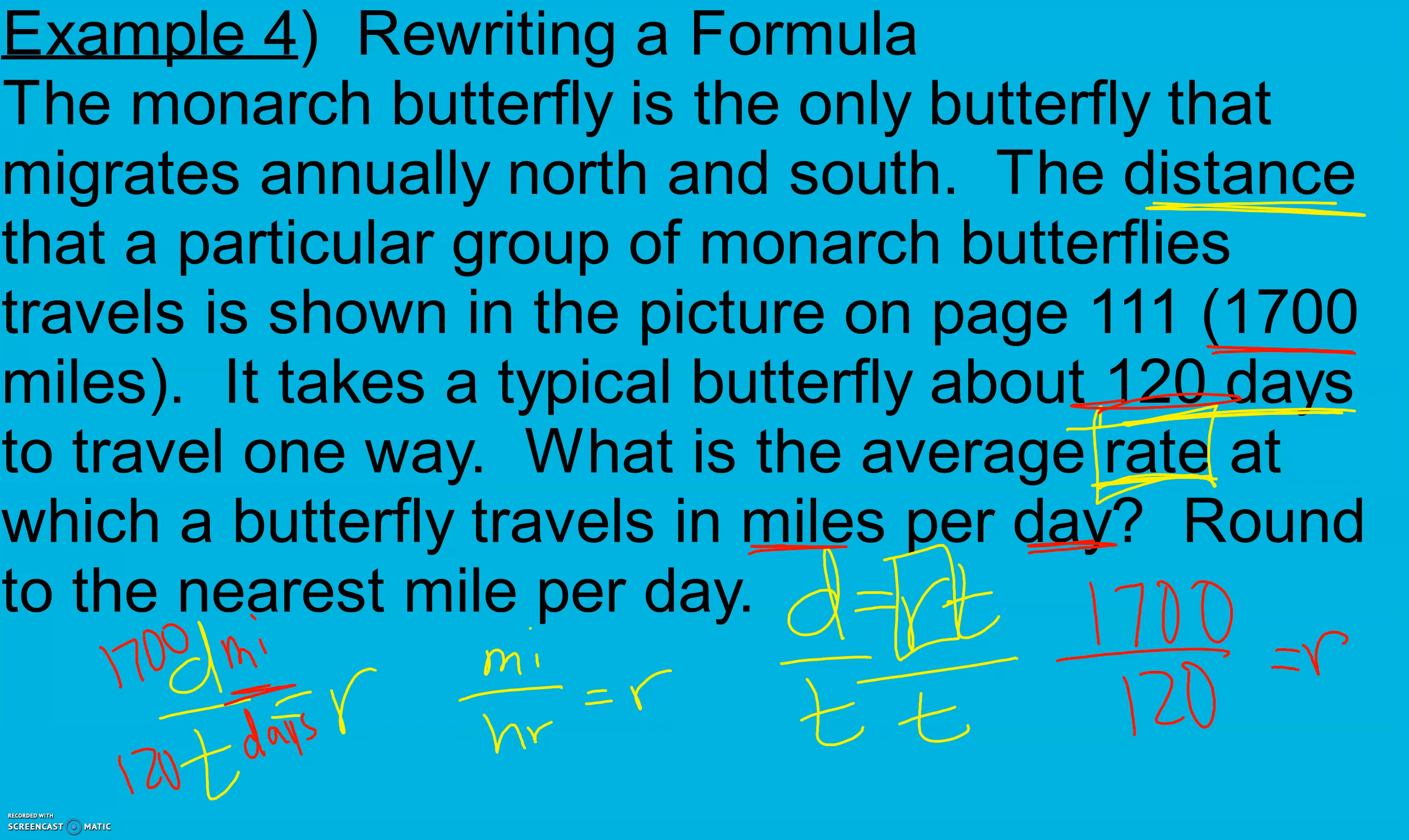Here we're going to round to the nearest mile. So I get 14.16666 going on. To the nearest day, I look right after my decimal point, one rounds down. So it's going to be just 14 miles per day is our rate.